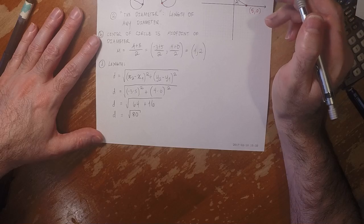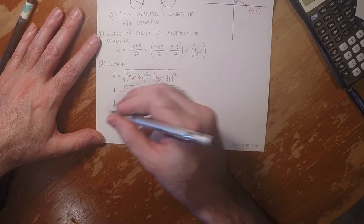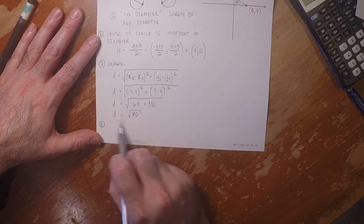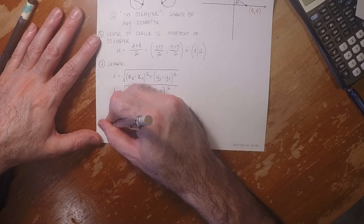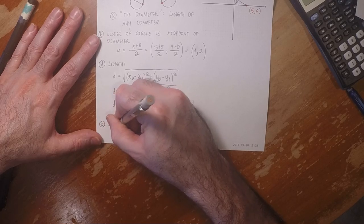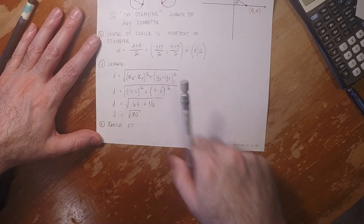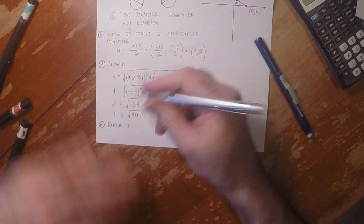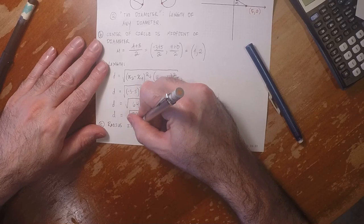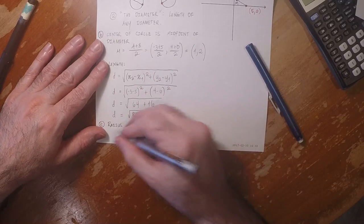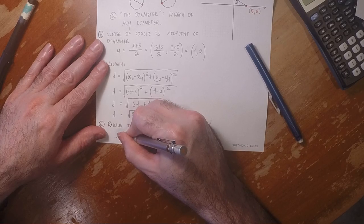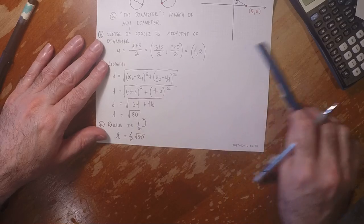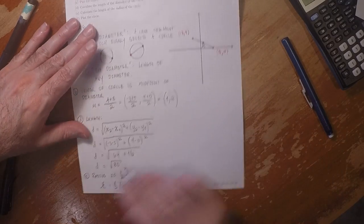So let's calculate the length of the radius. Okay, so E, well, the length of the diameter is right there. So then the length of the radius is half of that. The radius is half times square root 80. And then finally, F, plot the circle.